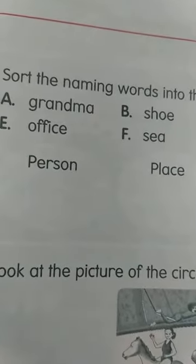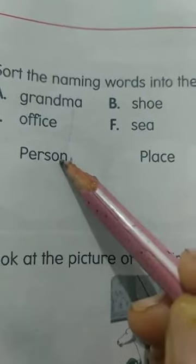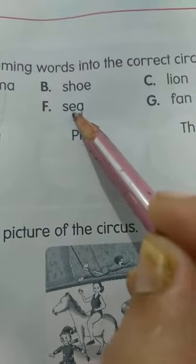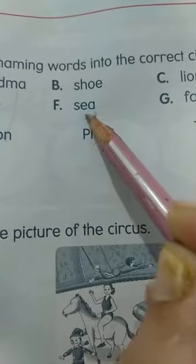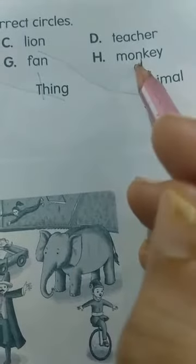Sort the naming words into the correct circle — animal, place, person. Under person: grandma. Office — place. Sea — place. Shoe — thing. Fan — thing. Lion — animal. Monkey — animal. Teacher — person.